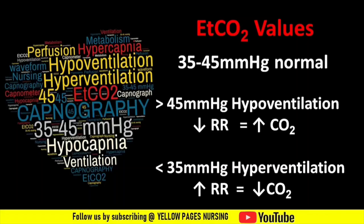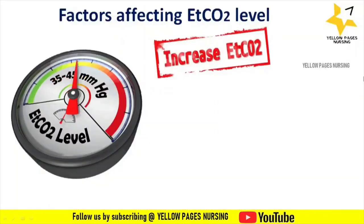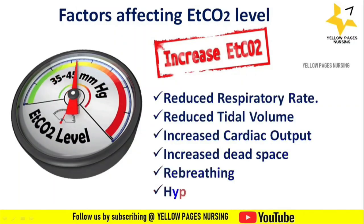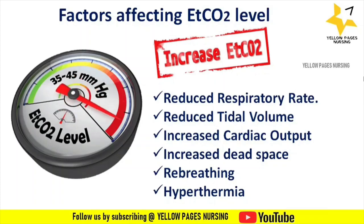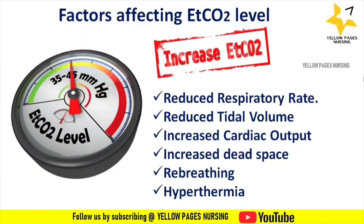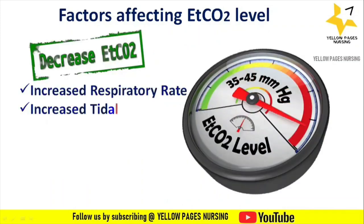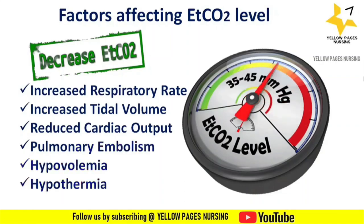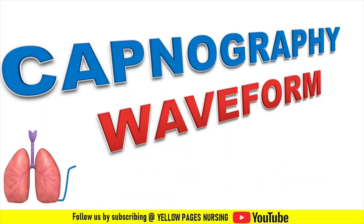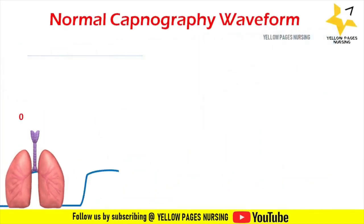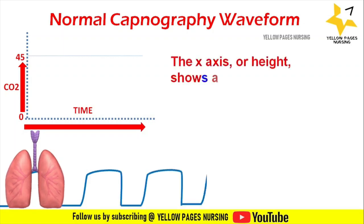Factors affecting EtCO2: causes of increased EtCO2 include reduced respiratory rate (hypoventilation), increased dead space, rebreathing or breath stacking, and hyperthermia. Causes of reduced EtCO2 include increased respiratory rate (hyperventilation), increased tidal volume, reduced cardiac output, pulmonary embolism, hypovolemia, and hypothermia.